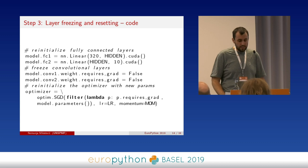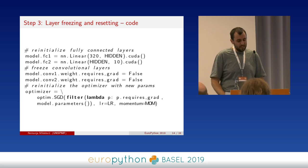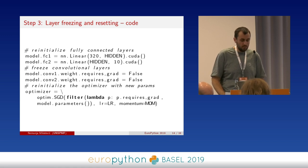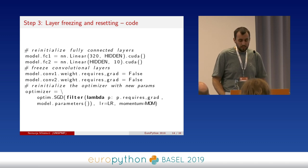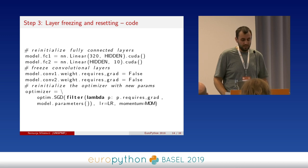Here is the code. The first two lines beneath the comment reinitialize the fully connected layers. The hidden constant is just 50. For freezing convolutional layers, you go into your model's convolutional layers — we have only two here, conv1 and conv2 — and set their weights to not require gradients, so Autograd won't modify them. Another gotcha: you need to reinitialize the optimizer if you are changing your layers, otherwise it will still attempt to modify them and throw an error.